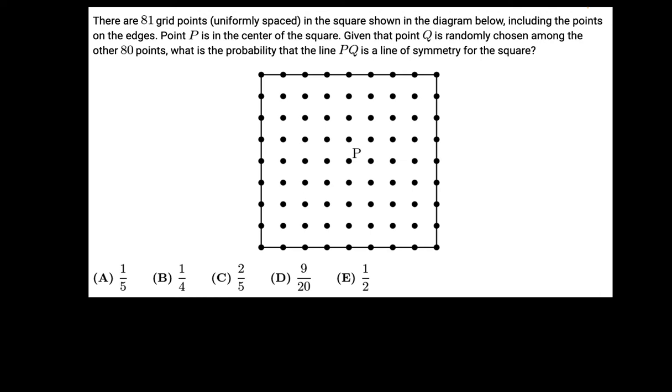There are 81 grid points, uniformly spaced, in the square shown in the diagram below, including the points on the edges.